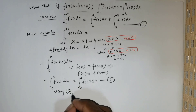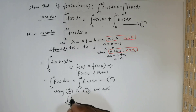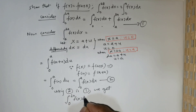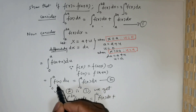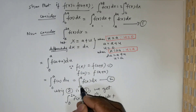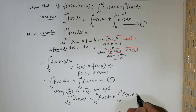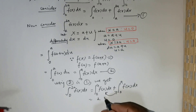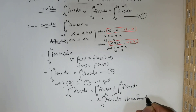Using these results, we get: the integral from 0 to 2a of f of x dx equals the integral from 0 to a of f of x dx, plus the integral from 0 to a of f of x dx. Adding these two together gives us 2 times the integral from 0 to a of f of x dx, which is the result that we needed.